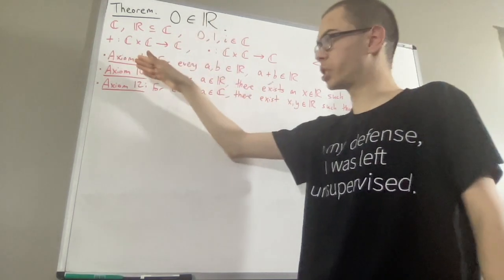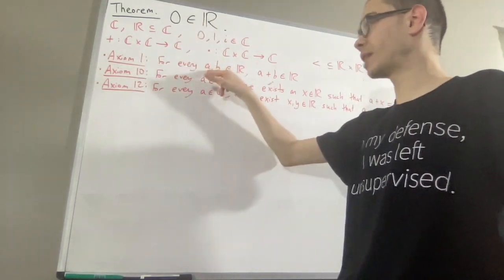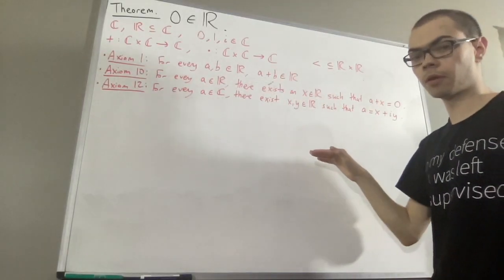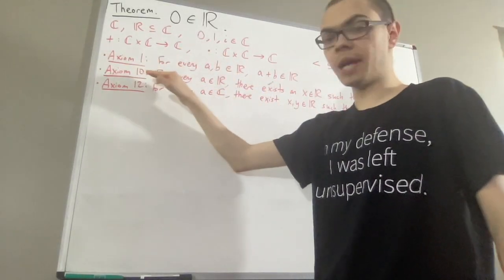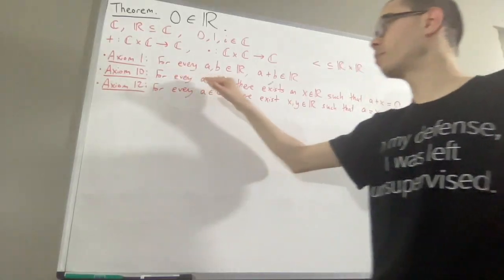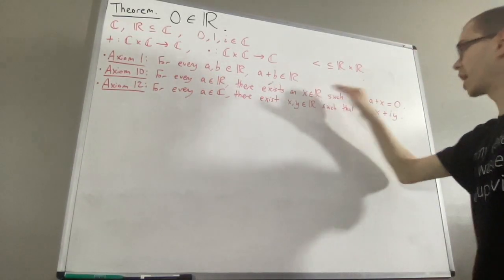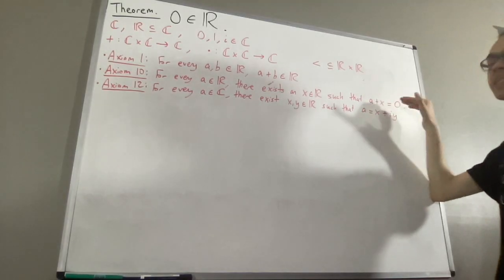We're going to be using axiom 1, which tells us, given any two real numbers A and B, A plus B is a real number. We're going to be using axiom 10, which tells us, for every real number A, there exists a real number X such that A plus X is equal to 0.